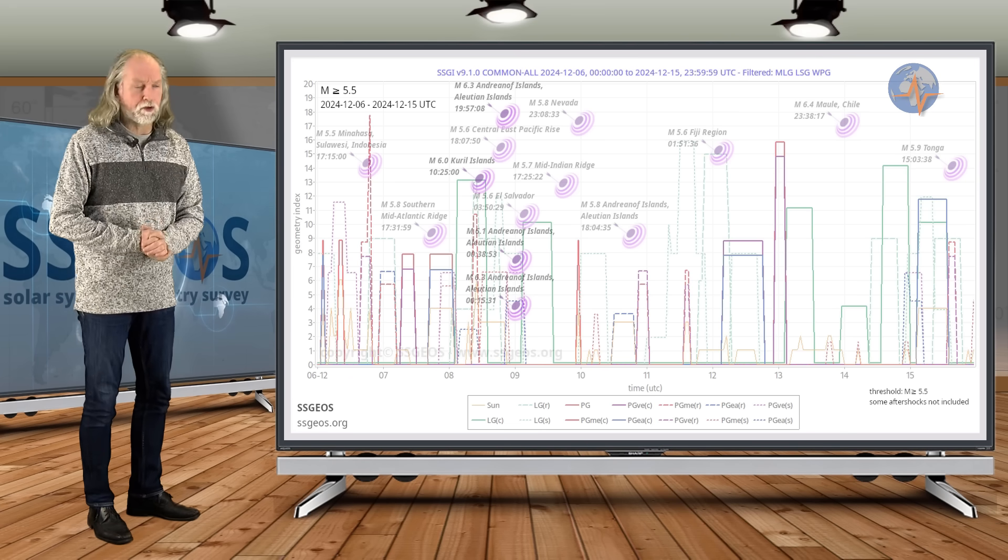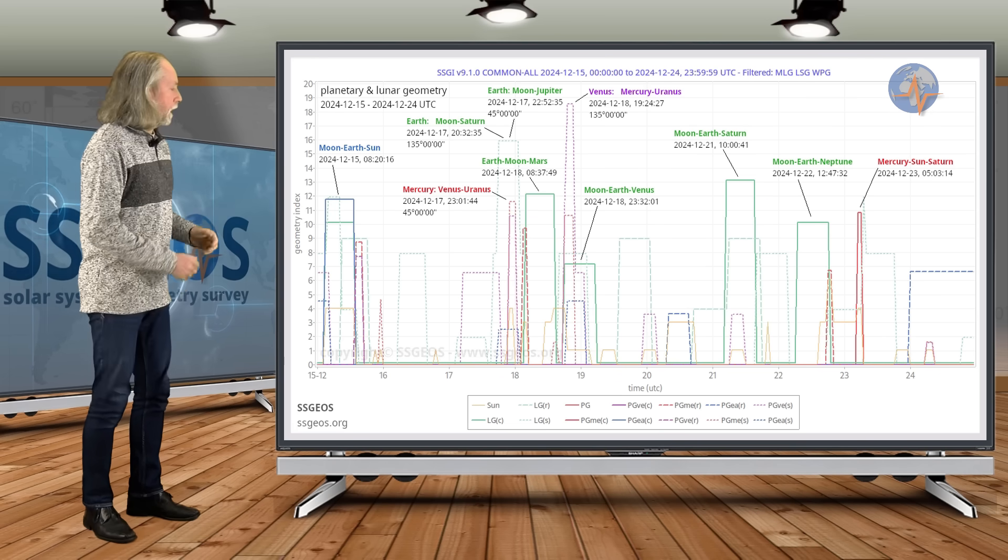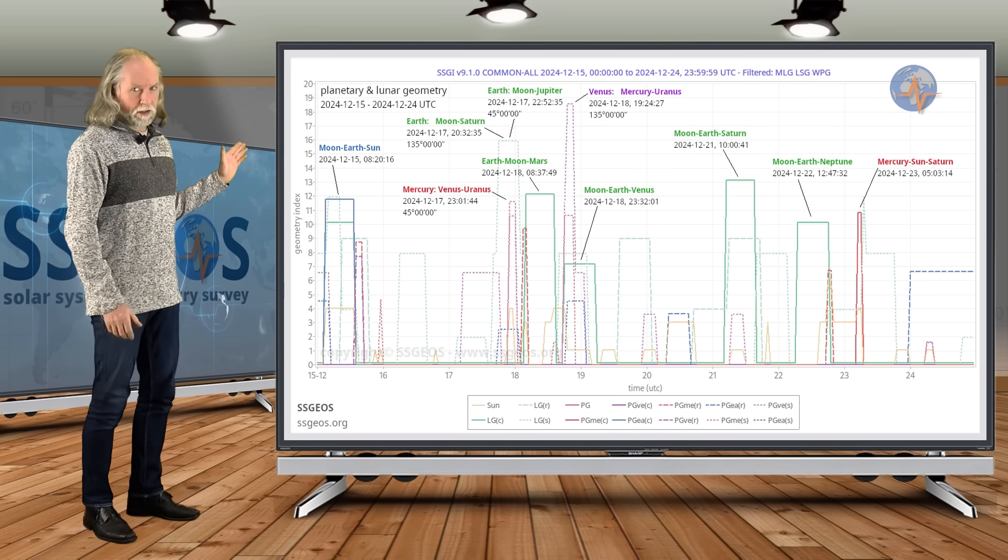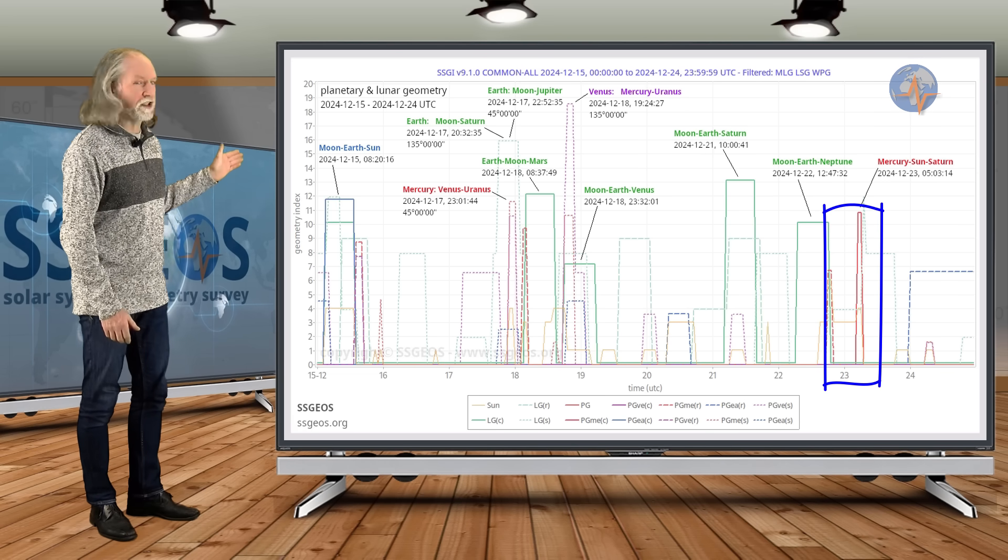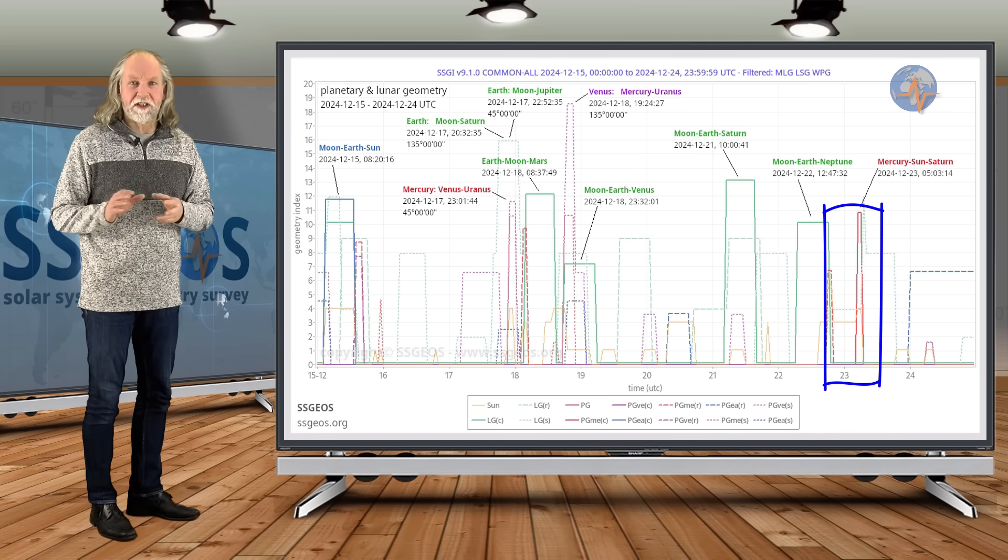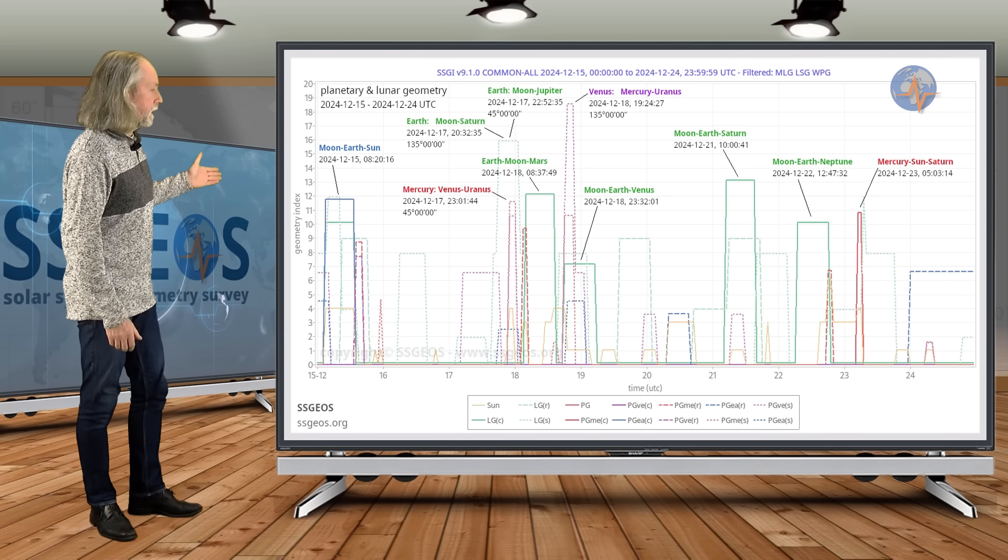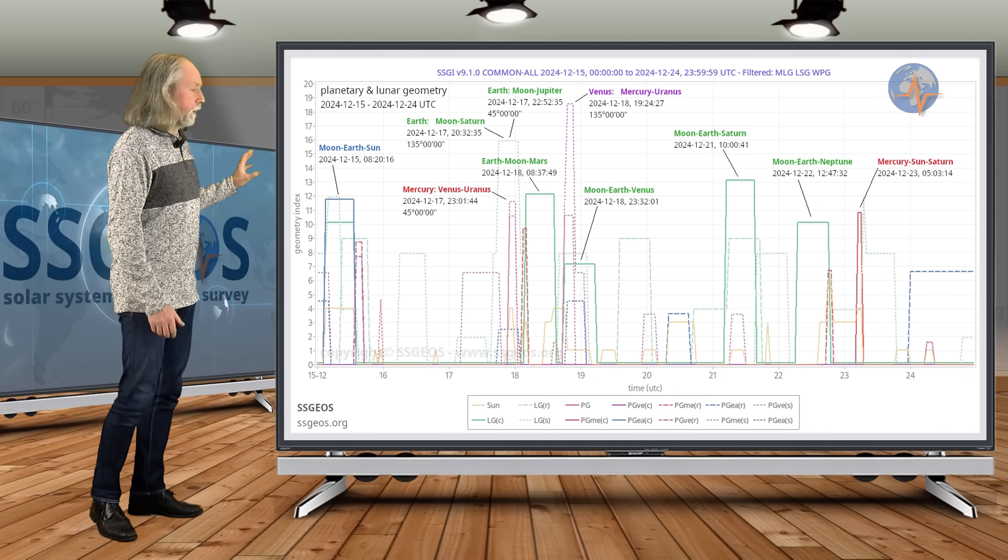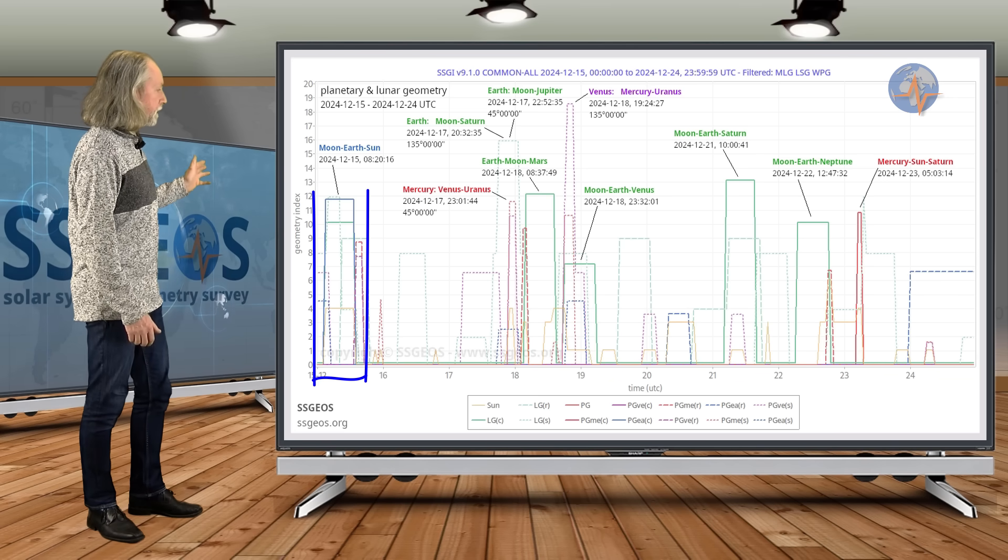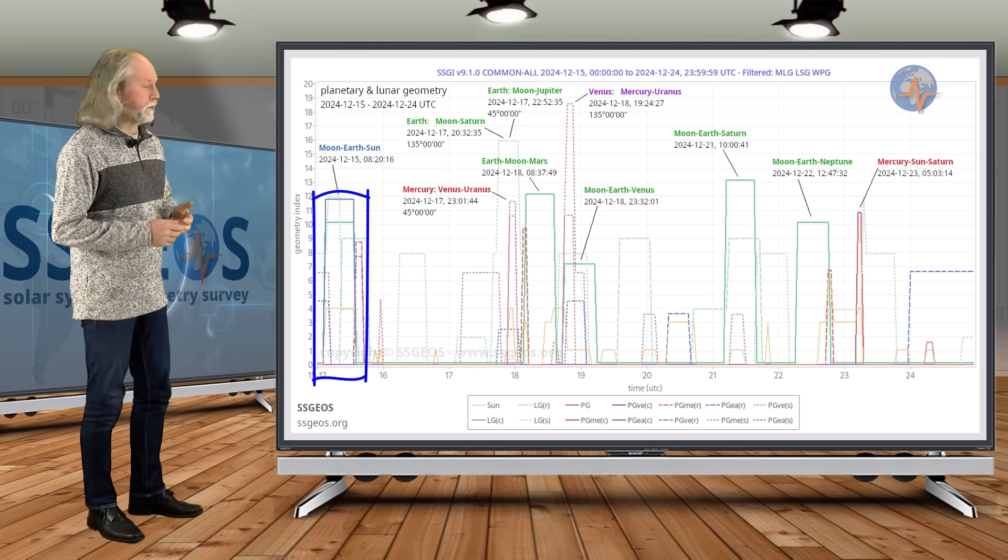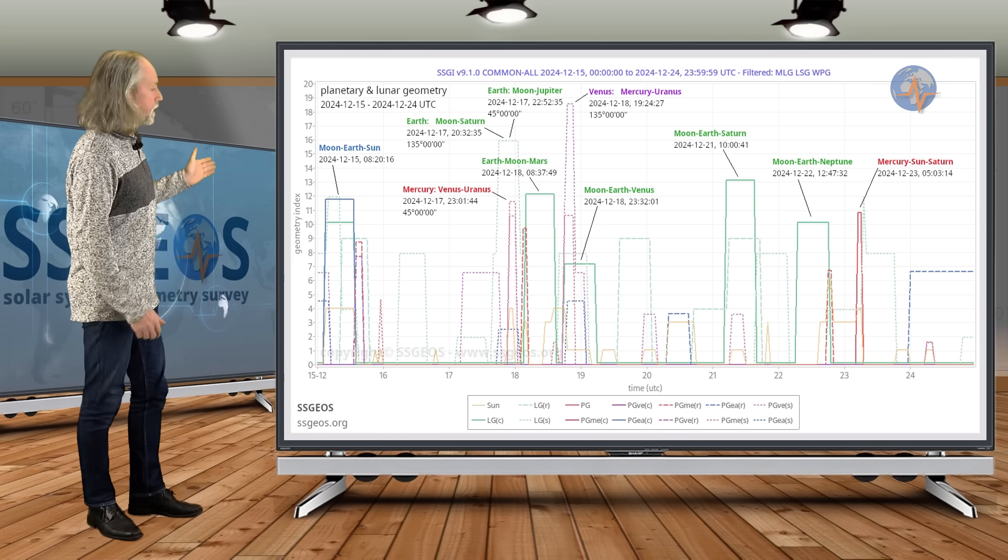On to the next timeframe. Only one planetary conjunction is going to happen, actually on the 23rd—that's Mercury-Sun-Saturn—that can sometimes result in a mid-6 magnitude earthquake in the days following that geometry. But overall, we have primarily lunar geometry coming up. We see the full moon on the 15th. I overlapped the 15th here, and what I would like to pay special attention to is a convergence of some lunar and planetary geometry on the 18th and 19th, especially the 18th.